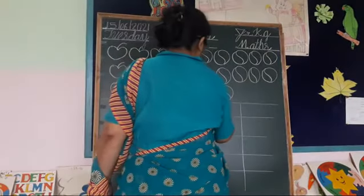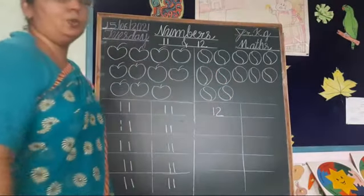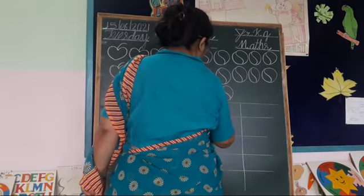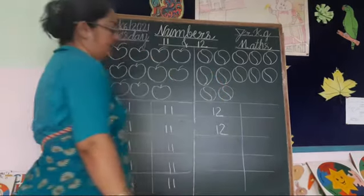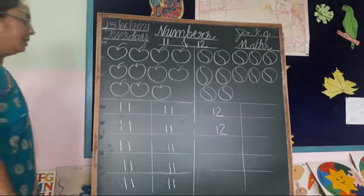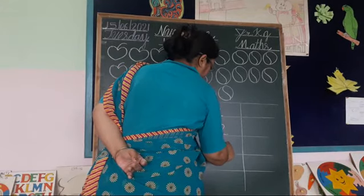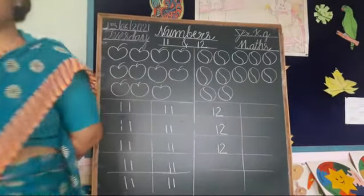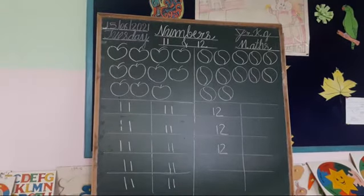First, you write number one. Then after, you write number two. One, two — twelve. First, you write number one, then number two. One, two — twelve. First leg number one. After, hard circle, slant, and slip leg — number two. One, two — twelve.